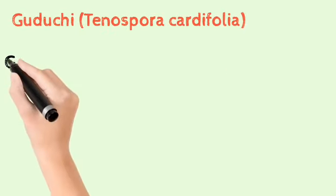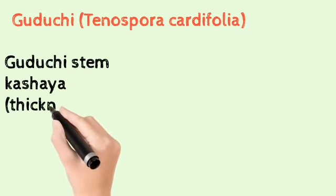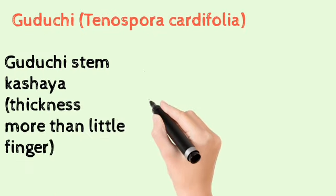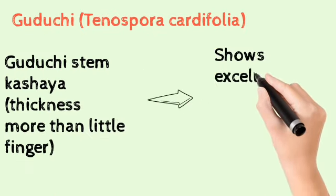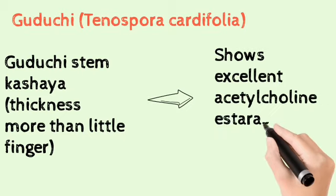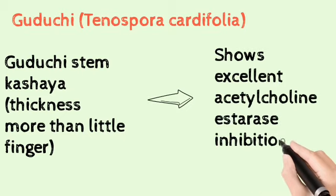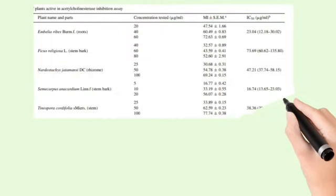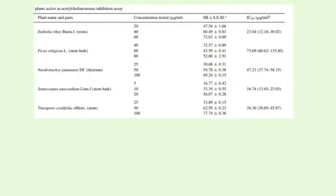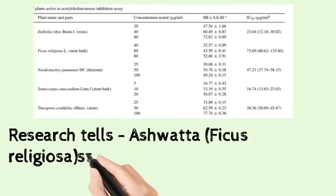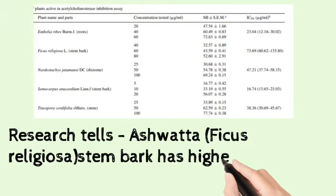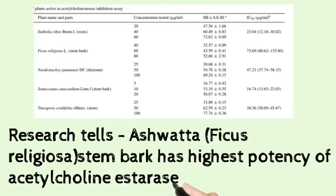In Ayurveda, we can administer the patient with Guduchi. The Guduchi stem which is more than the thickness of the little finger — the kashaya prepared from this Guduchi stem can have a very good action on acetylcholinesterase inhibition. Research also tells us that Ashwattha, which is Ficus religiosa stem bark, has the highest potency of acetylcholinesterase inhibition.